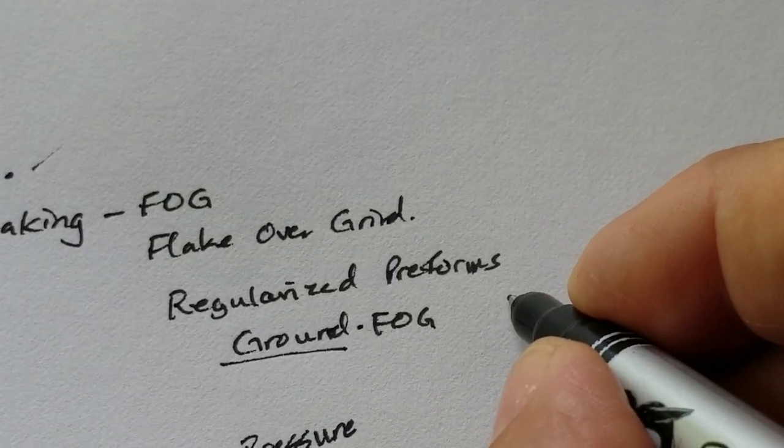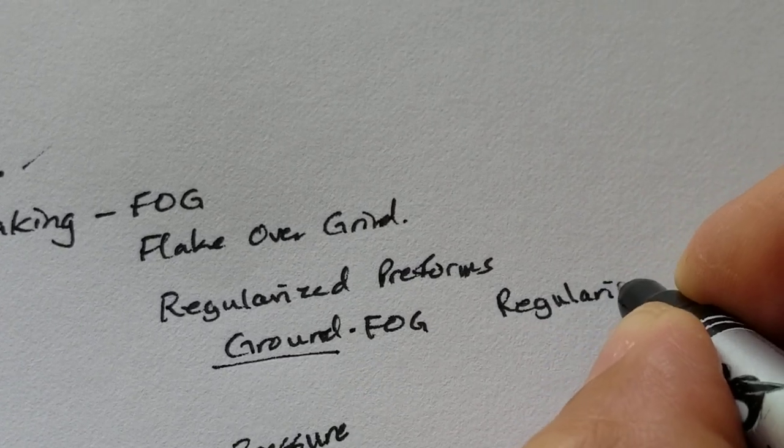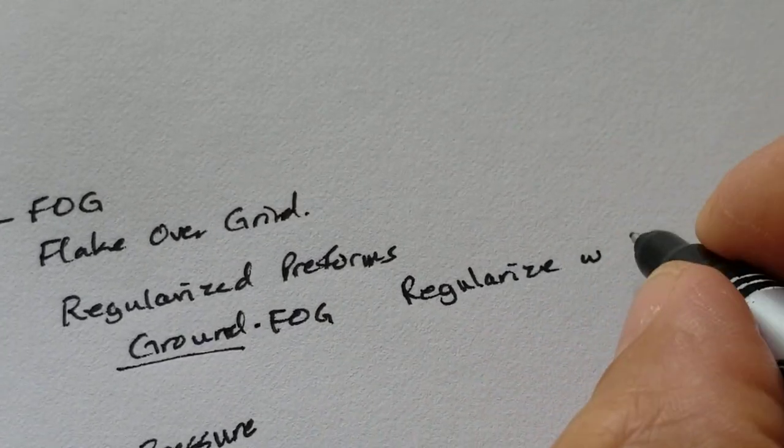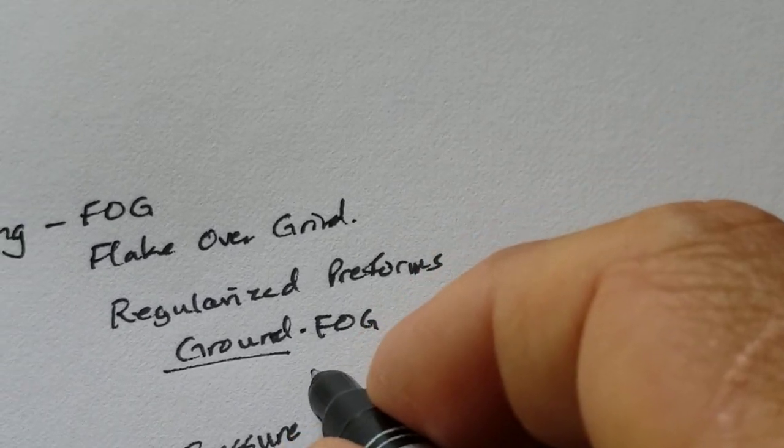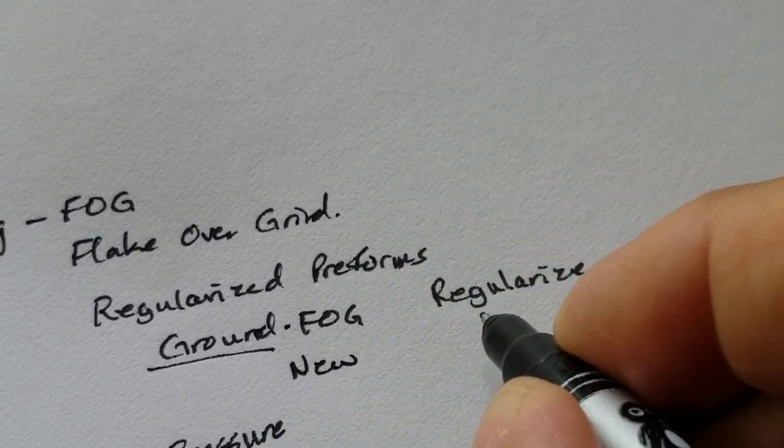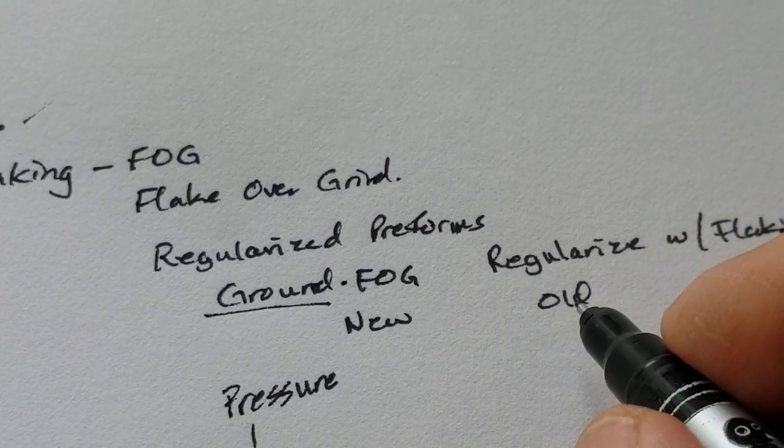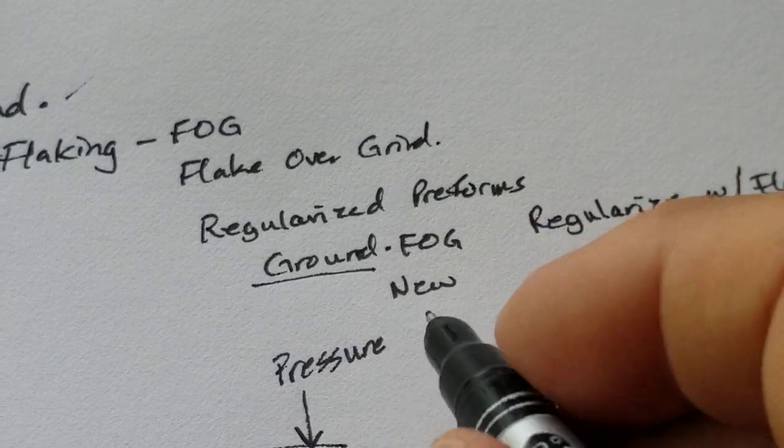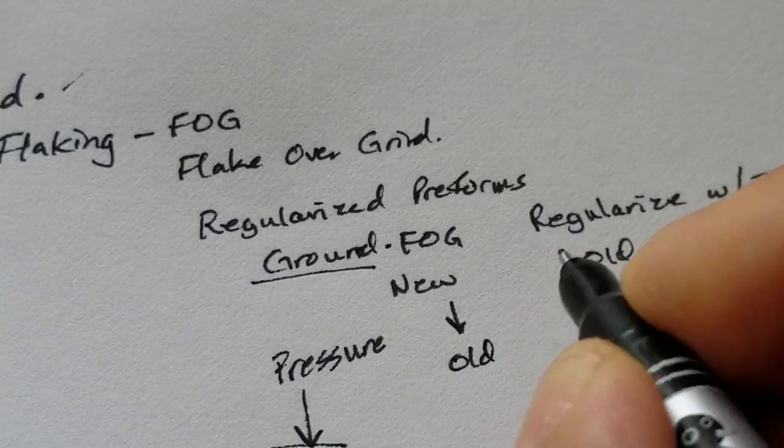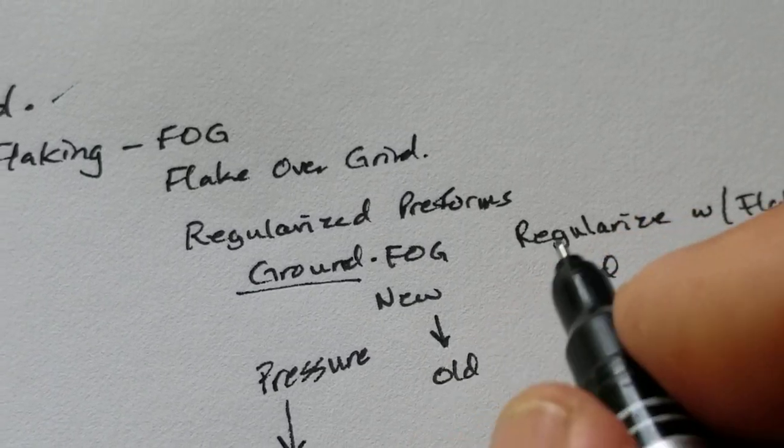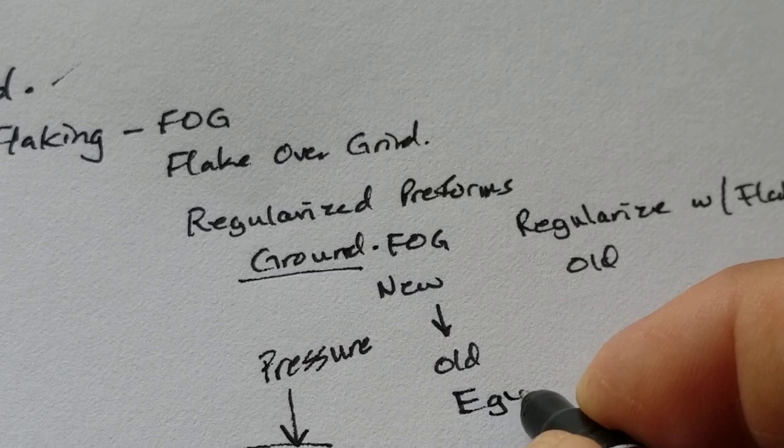The natural way is to regularize with flaking. This is the new, this is the old. Now, are there exceptions? Yes. Flake-over-grind was done in the old ways, in the old days, by at least one group: Egyptians during the Neolithic.